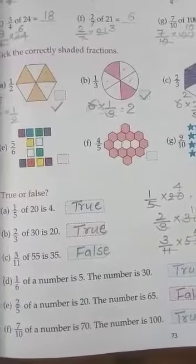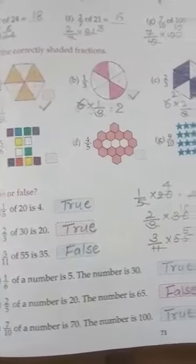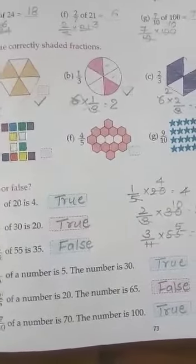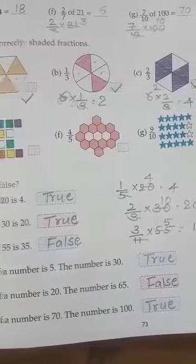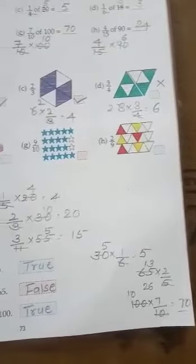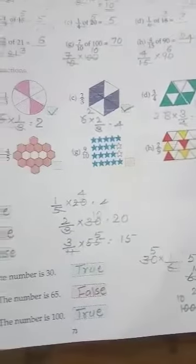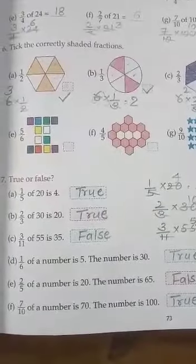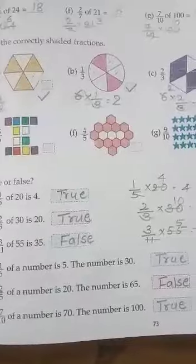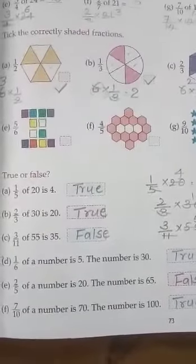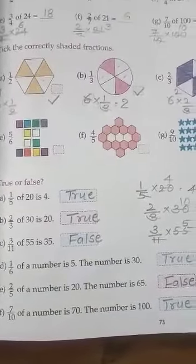1 by 6 of a number is 5, the number is 30. 2 by 5 of a number is 20, the number is 50.